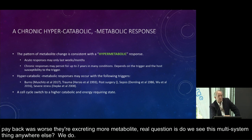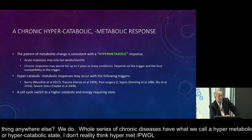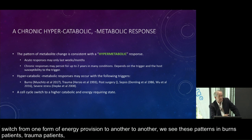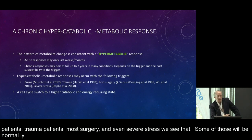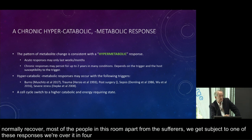Do we see this multi-system thing anywhere else? Yes — a whole series of chronic diseases have what we call a hypermetabolic or hypercatabolic state. I would prefer to describe it as a cell-cycle switching anomaly, where they've switched from one form of energy provision to another. We see these patterns in burns patients, trauma patients, post-surgery, sepsis, and even severe stress. Most people recover within four to six weeks, but CFS people don't — somehow they get stuck in this shifted metabolic state.